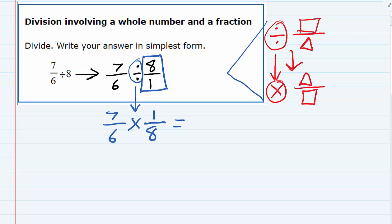In this problem, it doesn't do us any good. So we can just multiply the top, 7 times 1 is 7, multiply the bottom, 6 times 8 is 48.